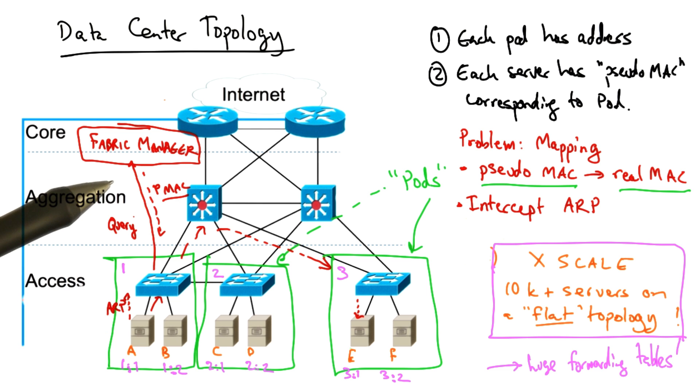By intercepting ARP queries in this way and providing a mapping between topological pseudo MAC addresses and real physical MAC addresses, we can achieve hierarchical forwarding in a large layer two topology without having to modify any host software.